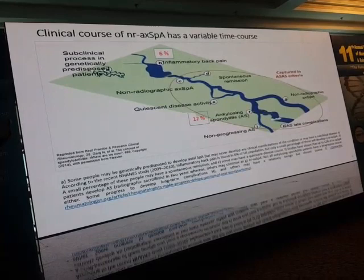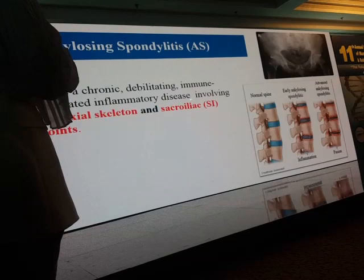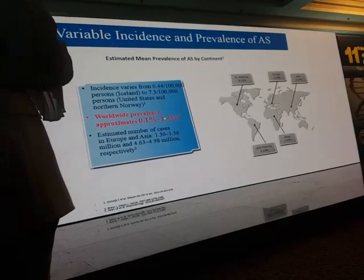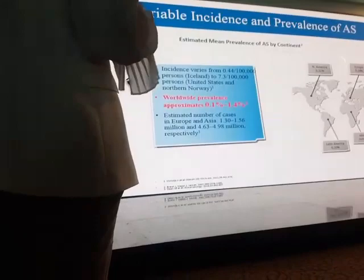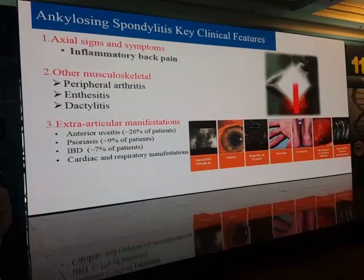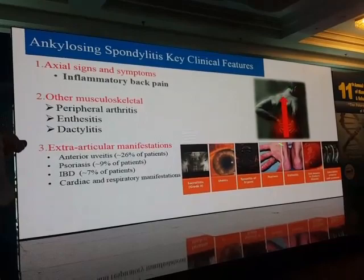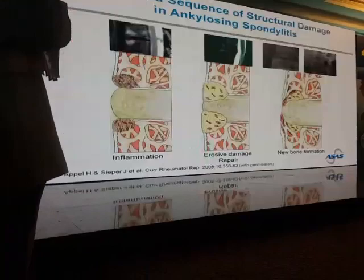AS is a chronic debilitating immune-mediated inflammatory disease involving the axial skeleton and sacroiliac joints. The prevalence of AS worldwide is 0.1% to 1.4%, with the highest incidence in North America and least in Africa. Being one of the SpA family, the leading symptom is inflammatory back pain, which may be associated with extra-articular or other musculoskeletal manifestations.